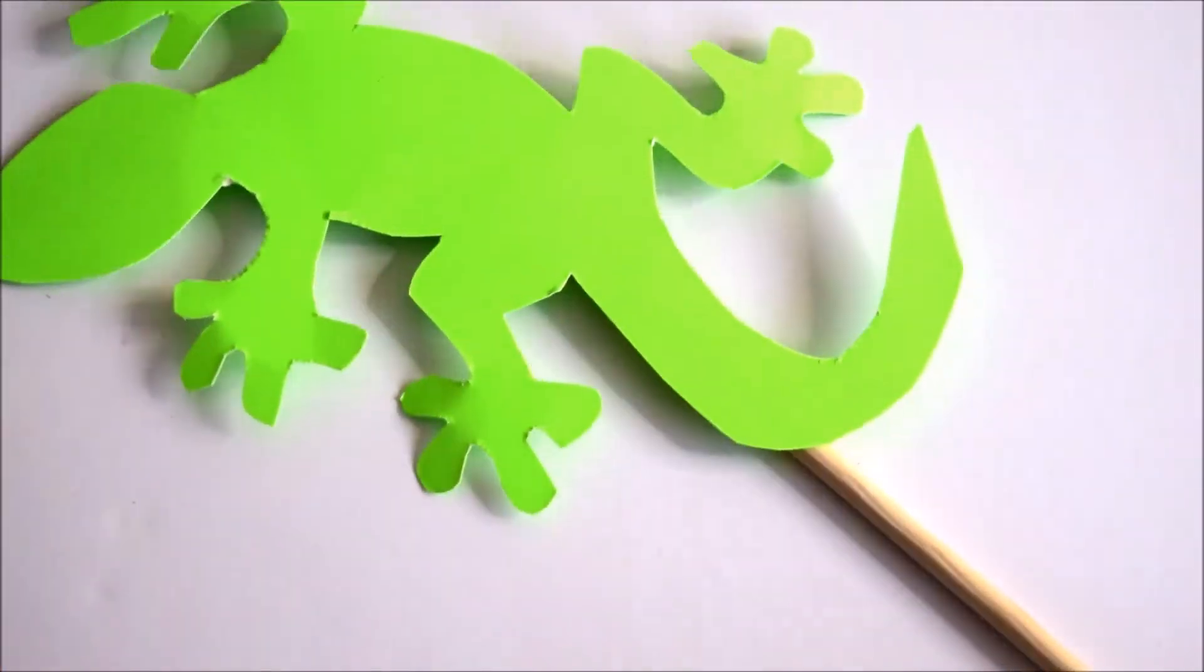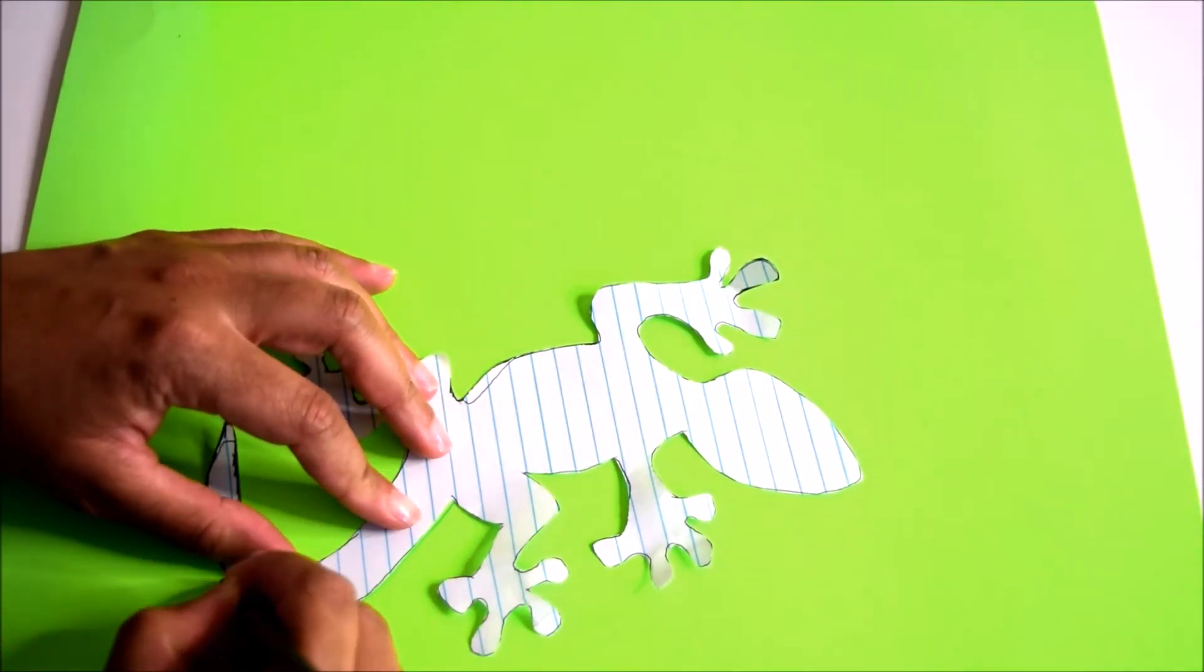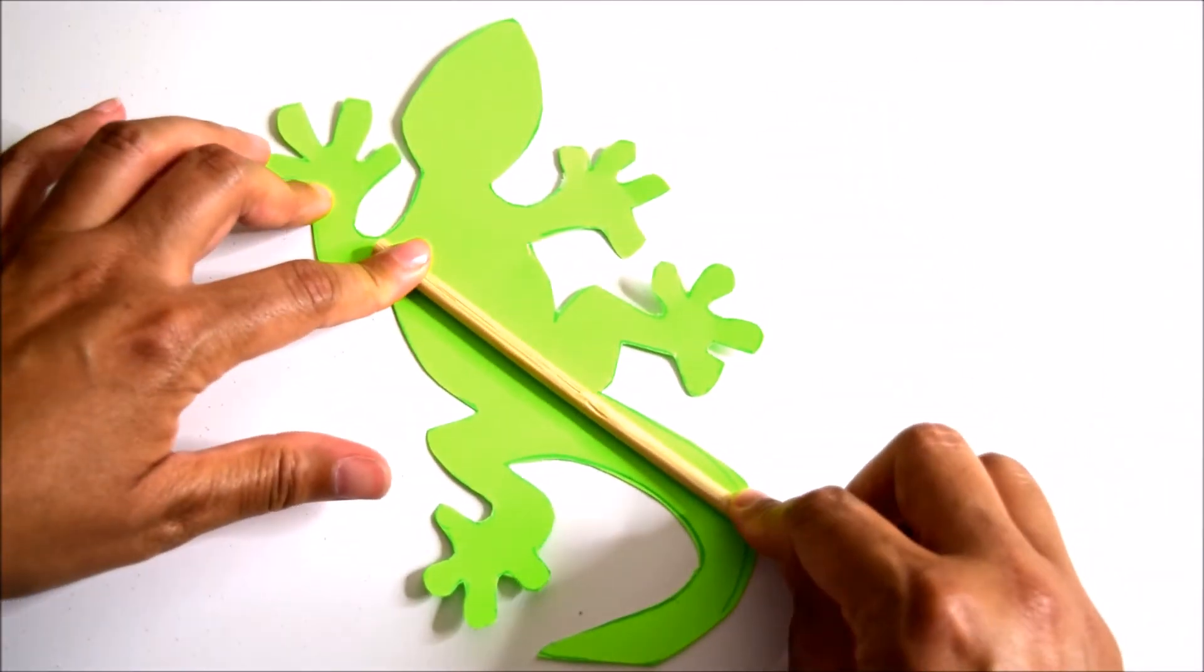So next are going to be photo props and with this one you just need a poster board in a neon color and then you just trace out lizards, birds, or whatever and then you glue on a wooden dowel and that is the tutorial.